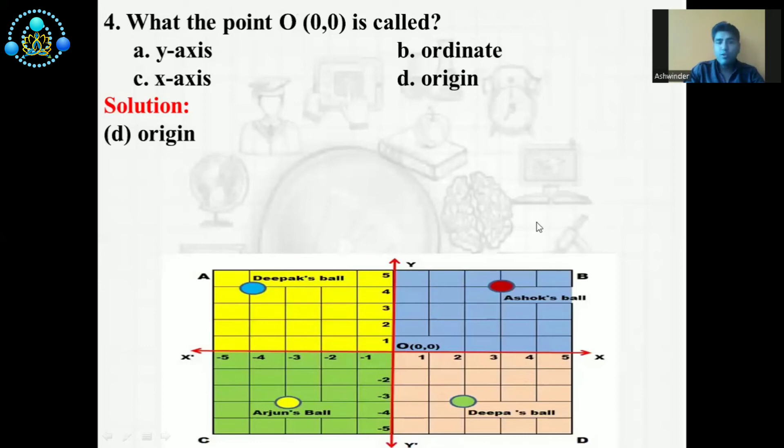What is the point O (0, 0) called? Again, we have four options. A: y-axis. B: ordinate. C: x-axis. D: origin.